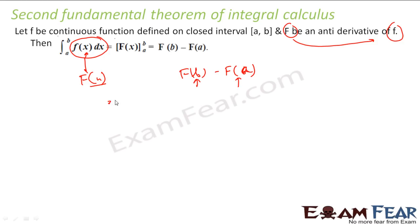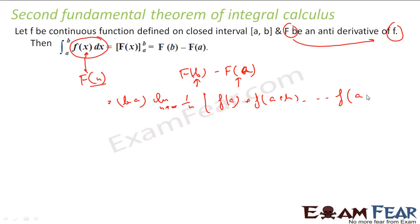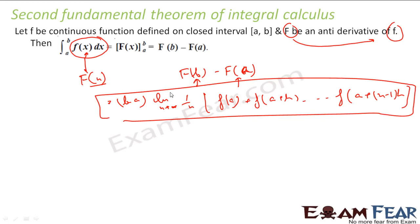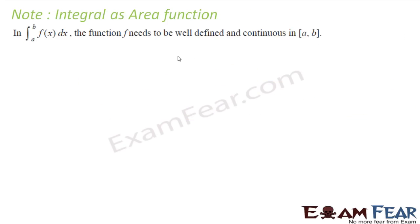Earlier we used the big formula: b minus a, limit n tends to infinity, 1/n, f(a), f(a+h), up to f(a+(n-1)h). Instead of that big formula, we now just find F(b) minus F(a) — we only need to find the antiderivative, capital F. One important note: when computing ∫f(x)dx from a to b, the function must be defined and continuous on the interval [a, b]. For differentiation we require continuity at a point; for integration we require continuity over the entire interval.